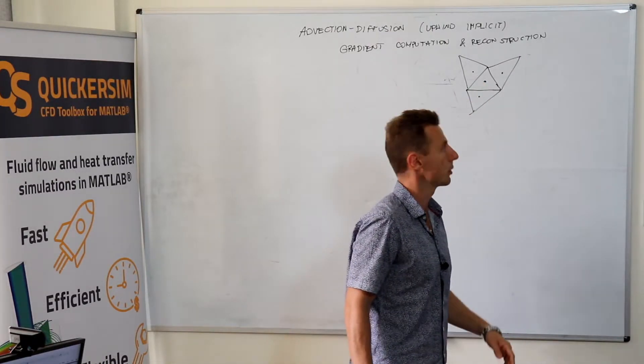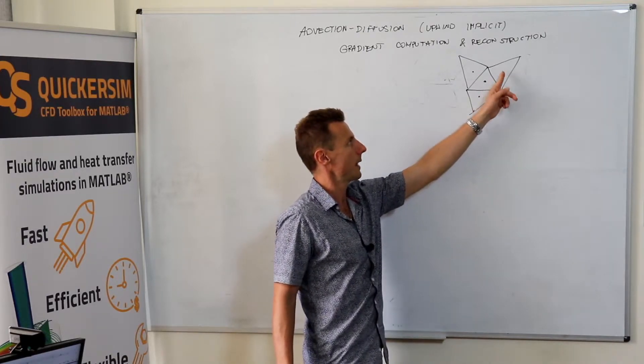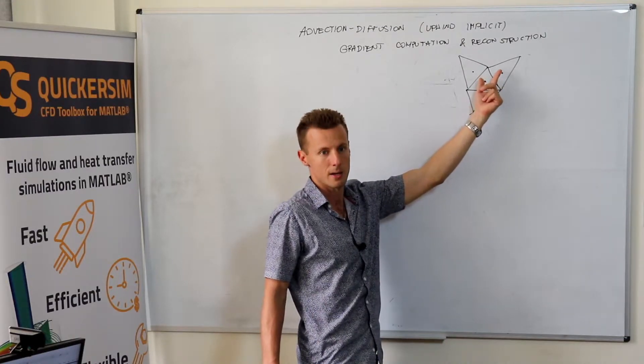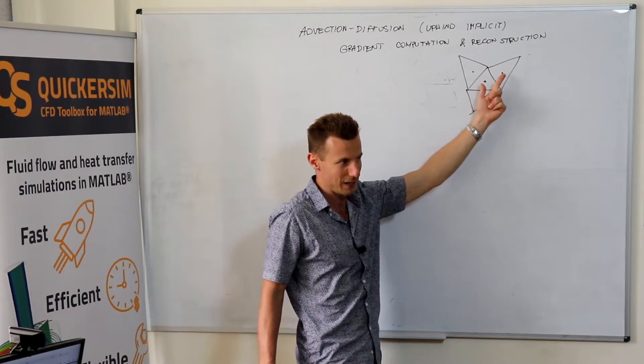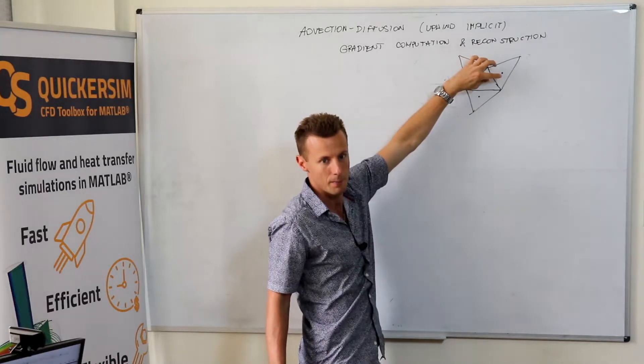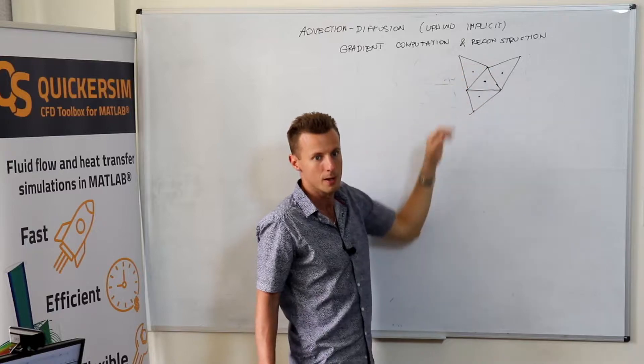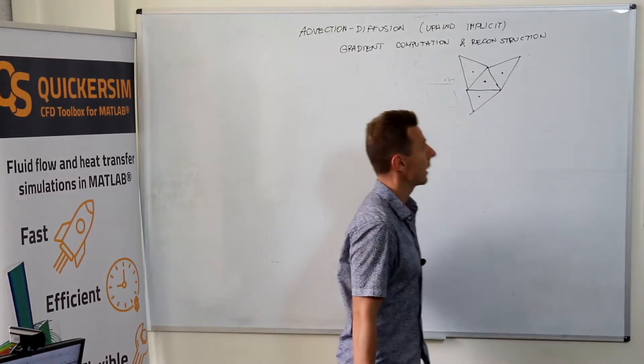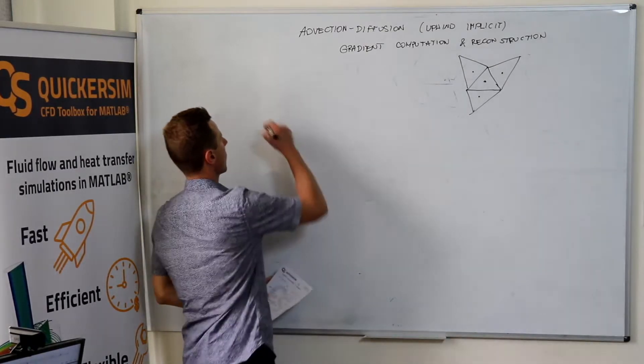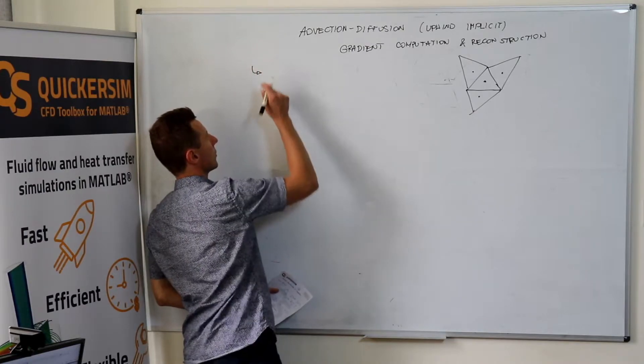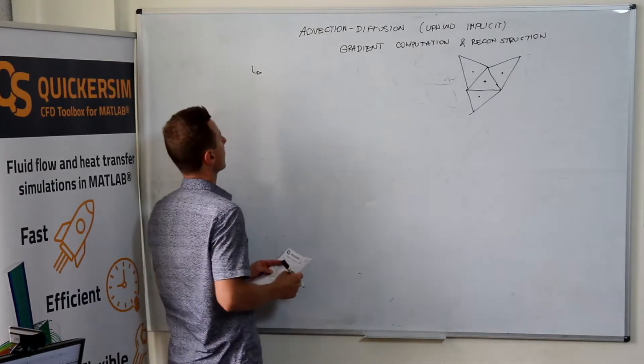But also, you could ask the question, do you need to make this approximation of neighbor minus my value divided by the distance, that it's really the proper gradient calculation, whereas it really isn't proper gradient formulation if these two things are not perpendicular to each other. So you might ask the question, how to better calculate the gradient?